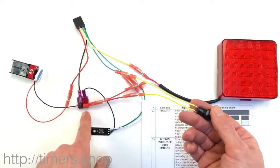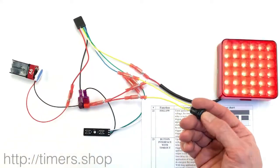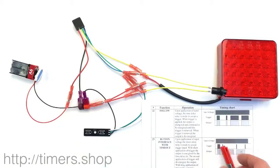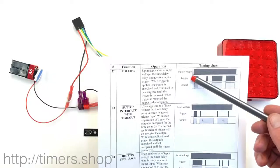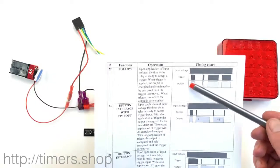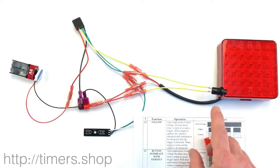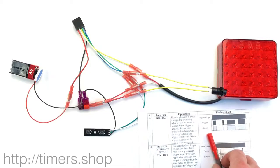If we want to reverse it, we can make the output come on when the trigger is not active and vice versa. To do that, we just need to change the trigger from function 4 to 5, and that will make it work the opposite way.